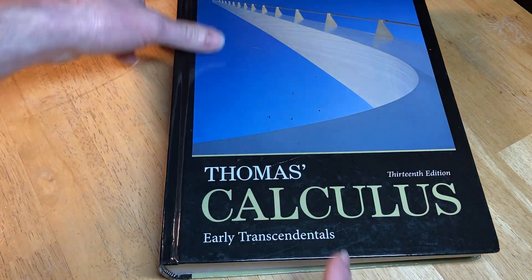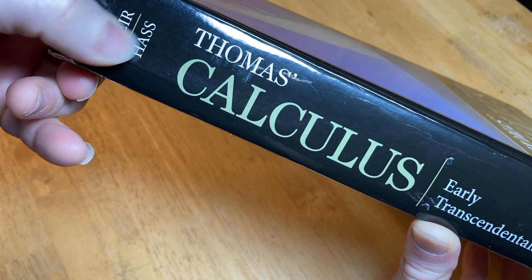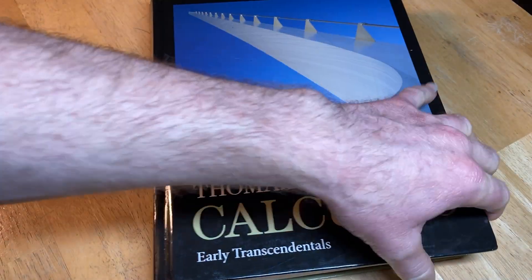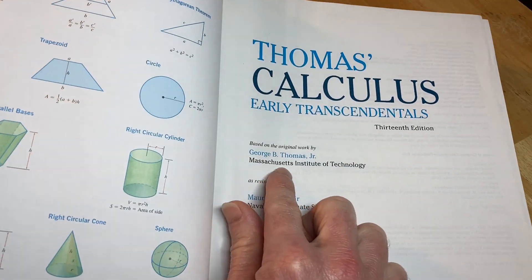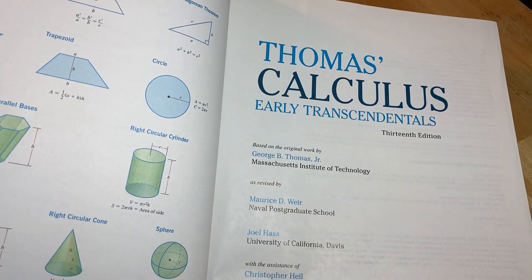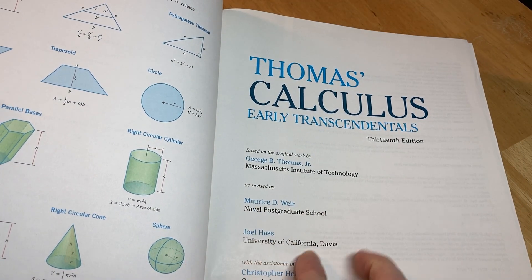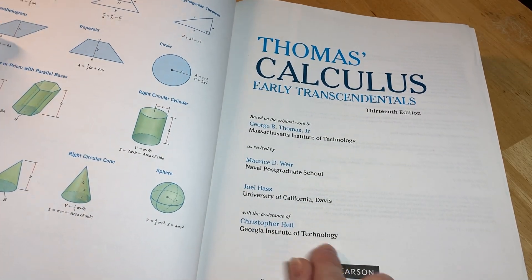It's the 13th edition, and it's written by Weir and Haas, so basically revised by these people. Let me show you what I mean by that. So it's based on the work by George B. Thomas, MIT, Massachusetts Institute of Technology, as revised by these people here, with the assistance of Christopher Heal.